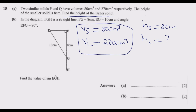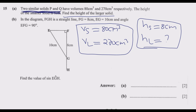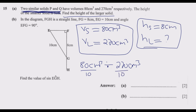Once we do that, we can use that same ratio to find the height of the larger solid, because the ratio of the volumes will be proportionate to the ratio of the heights since the two solids are similar. We have 80 cm³ to 270 cm³. We divide both sides by 10, and we end up with 8 cm³ to 27 cm³.